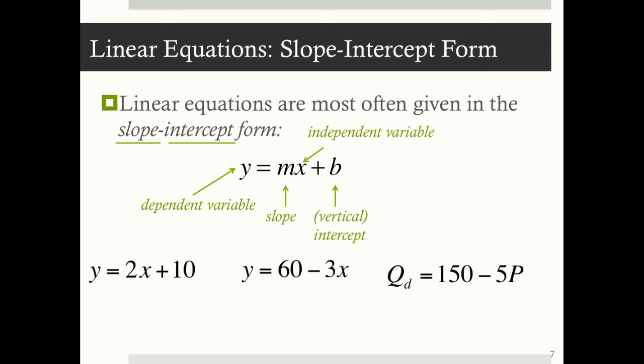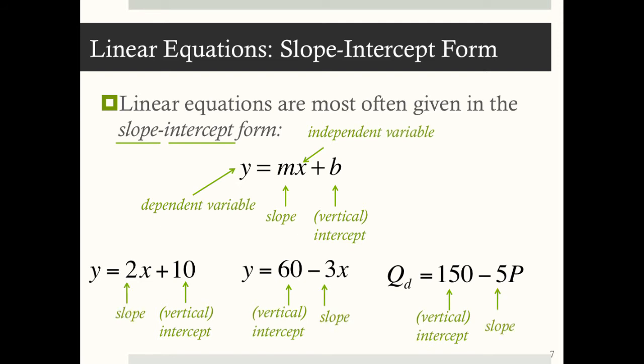These three equations are all linear equations: y equals 2x plus 10, y equals 60 minus 3x, and q sub d equals 150 minus 5p. When you look at a linear equation, you should immediately be able to identify the vertical intercept and the slope. The vertical intercepts are positive 10, positive 60, and positive 150 respectively. The slopes — the coefficients next to the x variable — are 2, negative 3, and negative 5.